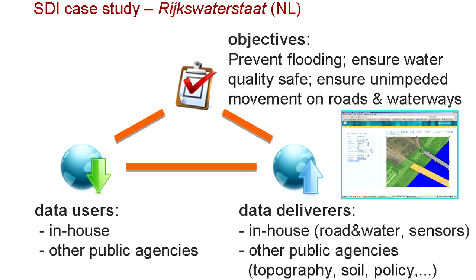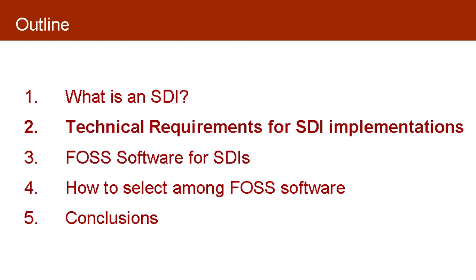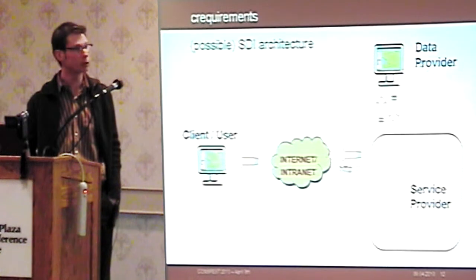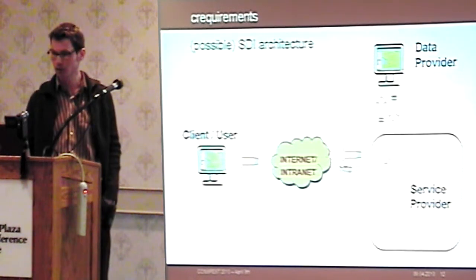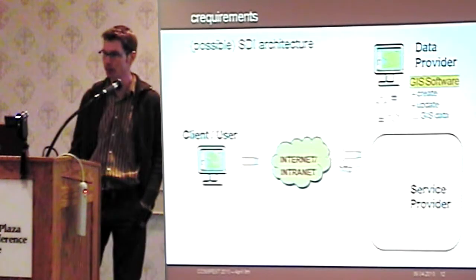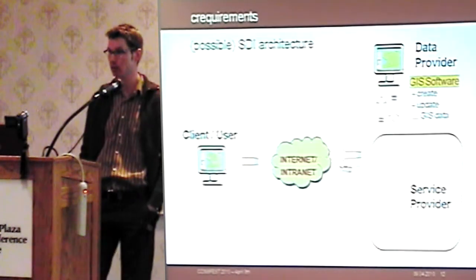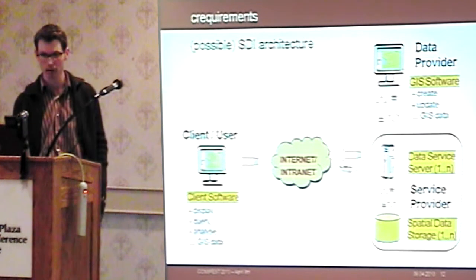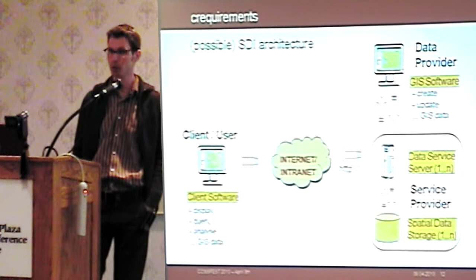Coming to the technical requirements: there are three types of people components — service provider, data provider, and user — and the idea is that all these interactions go via the internet. The data provider usually has GIS software to create and update GIS data. The service provider needs to provide services like serving maps to clients and also stores data from different data providers on central storage. On the client side, we have client software to display, query, and analyze GIS data — this could be something like Google Maps or Google Earth.